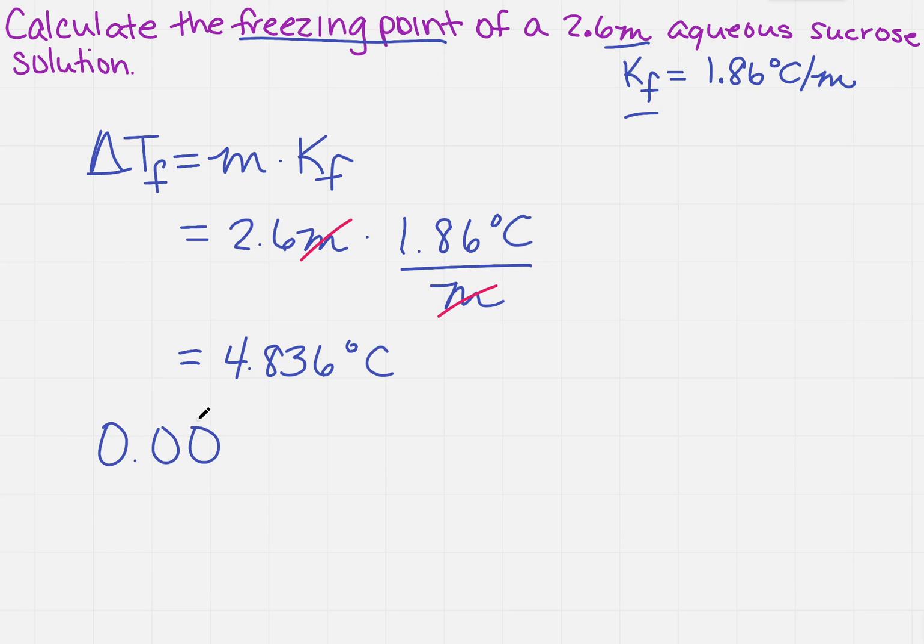Now, I write these vertically because I think it's easier to see the subtraction and to find your final significant figure. So when I subtract these, I get minus 4.836.